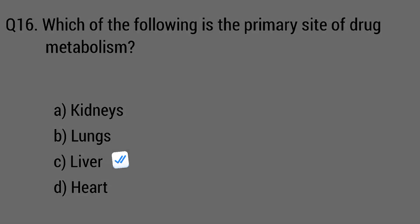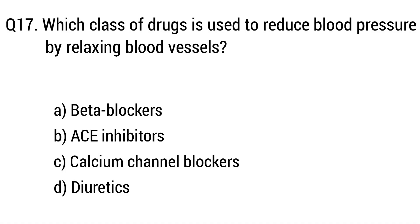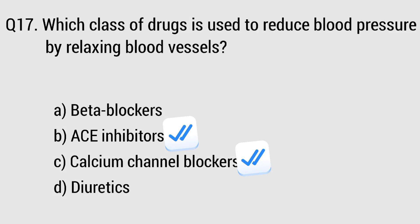Question number seventeen. Which class of drug is used to reduce blood pressure by relaxing blood vessels? The right answer is option B and C: ACE inhibitors and calcium channel blockers.